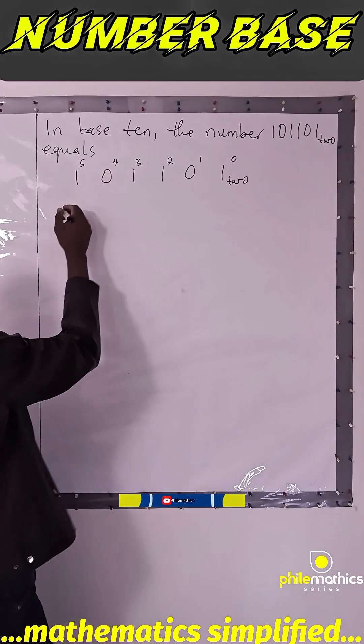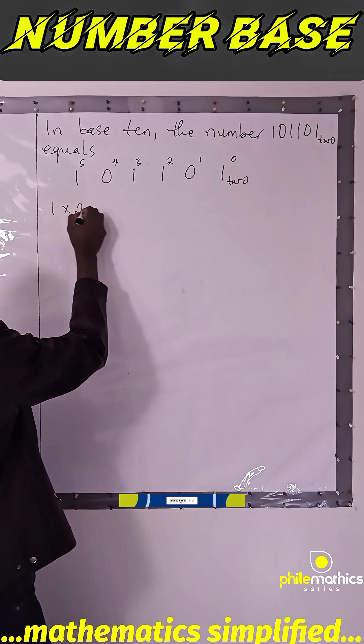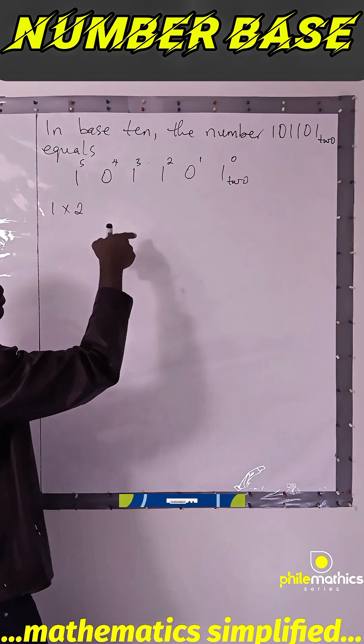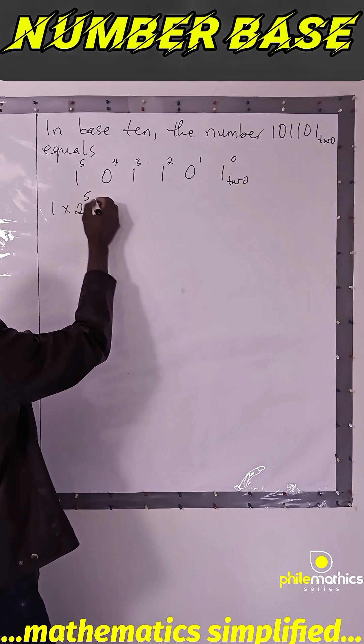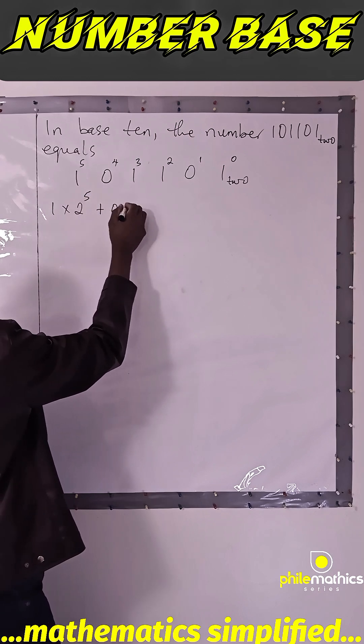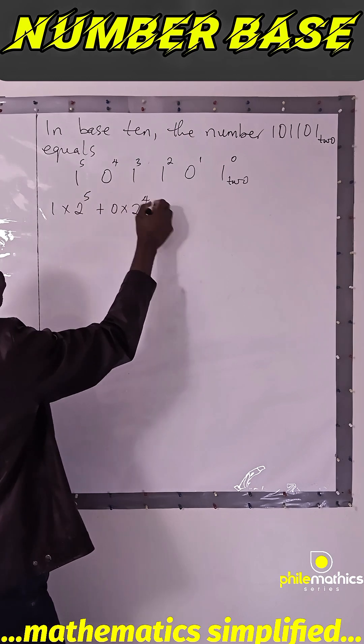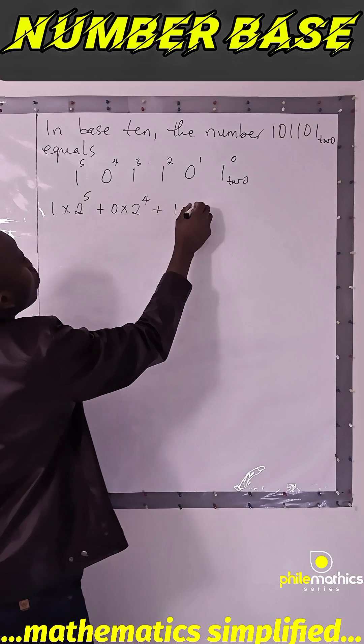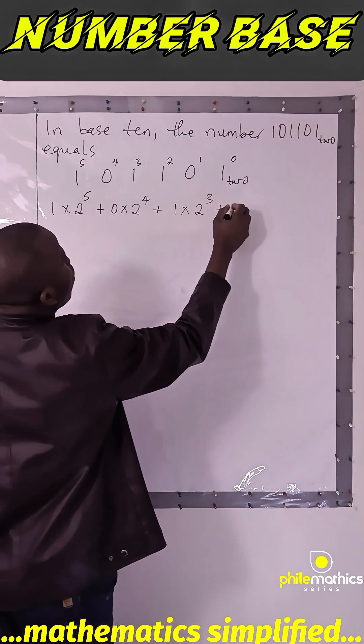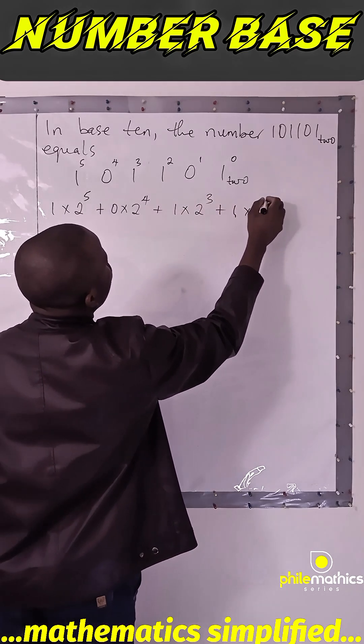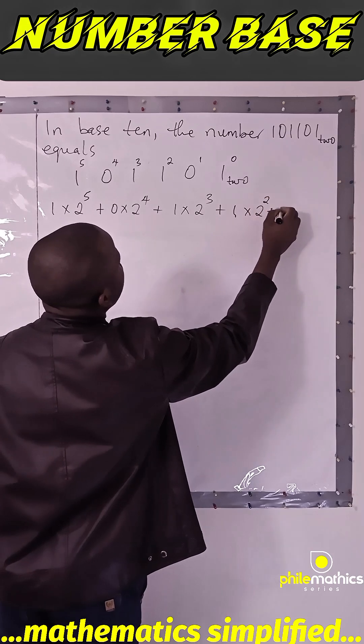So, this will be 1 times 2 to power 5 plus 0 times 2 to power 4 plus 1 times 2 to power 3 plus 1 times 2 to power 2 plus 0 times 2 to power 1 plus 1 times 2 to power 0.